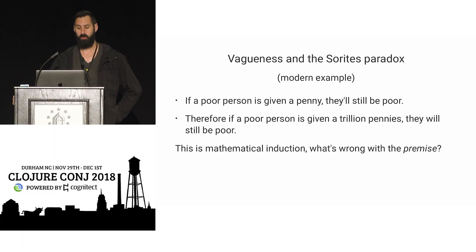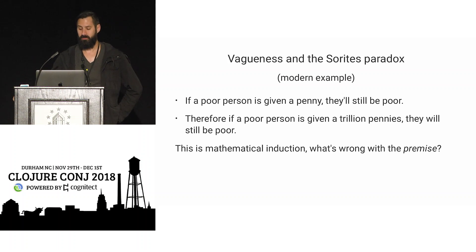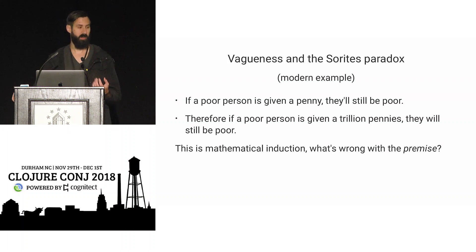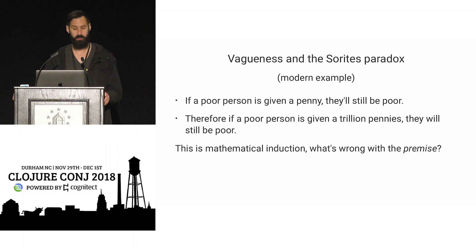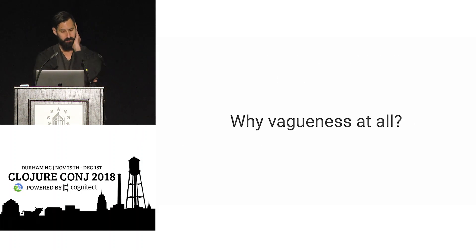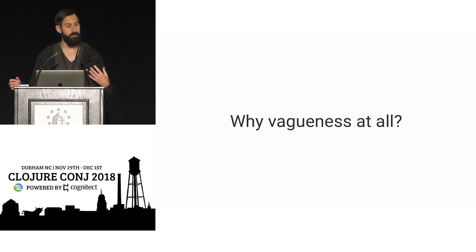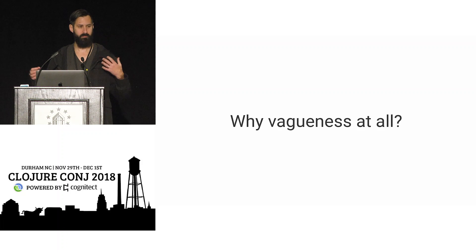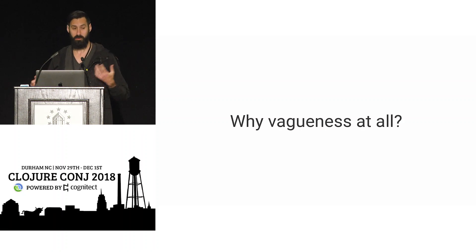We have to rely on our world model — there's a system at work. There are big gotchas if you try to jam a logic system into something working with natural language categories. The Sorites paradox: 'if a poor person is given a penny they'll still be poor; therefore if given one trillion pennies they'll still be poor.' This should be a sound argument by mathematical induction, but the premise is vaguely defined. You could take the poverty line literally, but that's not what 'poor' means — it just feels wrong.